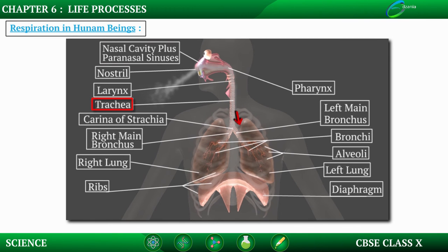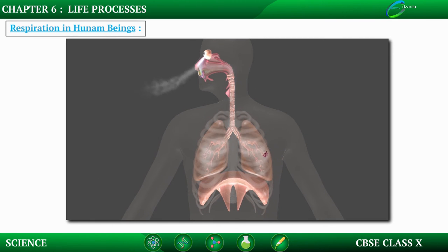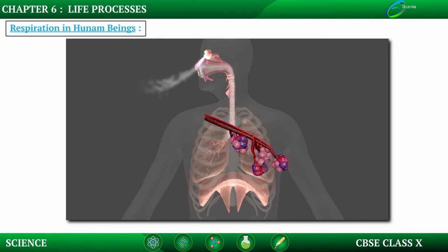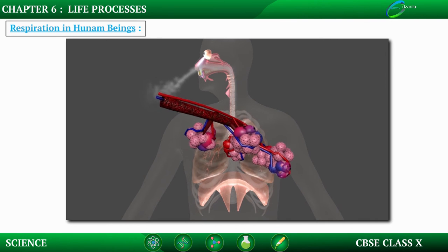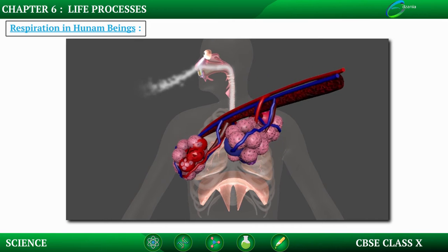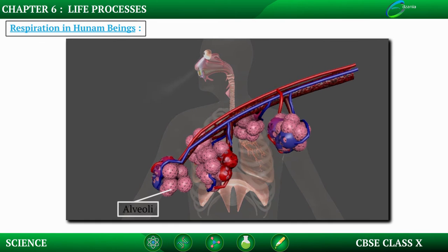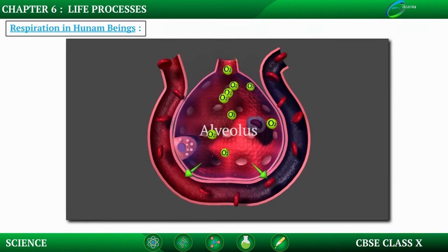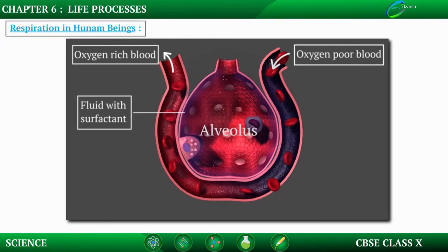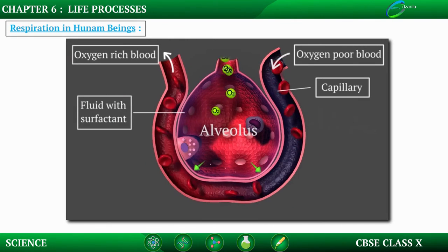From the trachea, air passes through the bronchi. The bronchi are like a network of tubes called bronchioles. At the end of the bronchioles, you can see balloon-like structures called alveoli. The function of alveoli is to provide the surface for exchange of oxygen and carbon dioxide. The walls of the alveoli contain an extensive network of blood vessels.